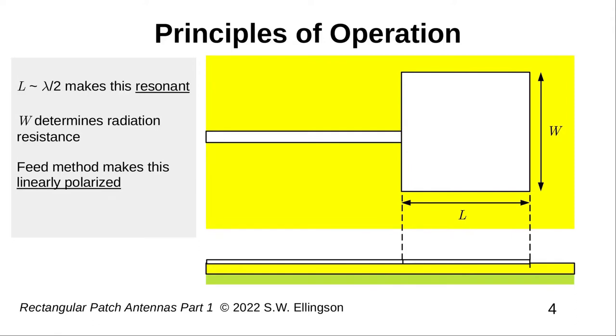As you might have guessed, the trick is to choose L and W so that the patch radiates power arriving from the transmission line, as opposed to reflecting this power back into the transmission line. The trick here will be to make L about one-half wavelength.